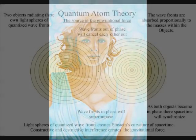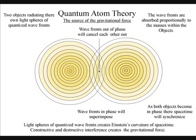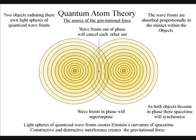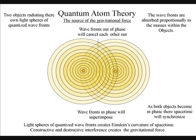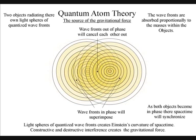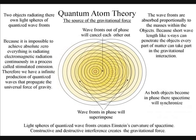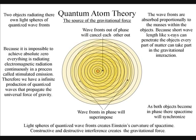When the wavefront of two spheres comes in contact, we will have destructive interference, and the wavefronts out of phase will cancel each other out. There will also be constructive interference between the wavefronts that are in phase, and they will superimpose or amplify. The radiating energy will be entirely absorbed proportionally to the masses within the objects, causing an unbalanced force, and the two objects will resonate together in a process known as gravity.